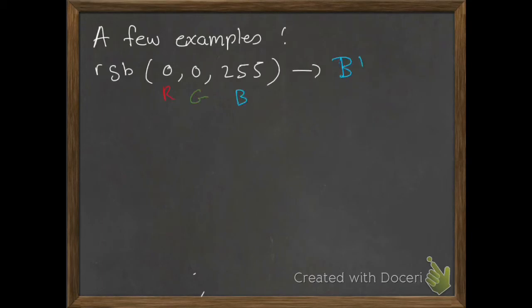A few examples with RGB triplets. In this case, we have 0, 0, 255. Red is turned off, green is turned off, and blue is turned on at full intensity. So we get a full intensity blue.